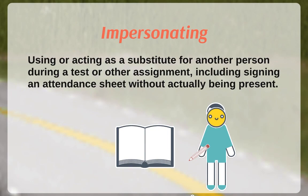Finally, the last form of academic integrity violation is impersonating. This is using or acting as a substitute for another person during a test or another assignment, including just signing an attendance sheet without actually being present. It is dishonest to take a test for someone else or to have someone else take a test for you, whether in person or online. Impersonation or fraud occurs any time you misrepresent who you are or what you have done — on academic assignments, verification of attendance, sign-up sheets, card swipes, website logins, or falsification of documentation related to employment or absences. The W.P. Carey School of Business holds integrity as our highest value.